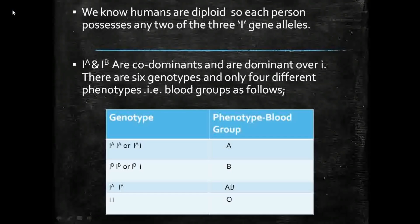Humans are diploid organisms, so each person possesses any two of the three I gene alleles. Iᴬ and Iᴮ are codominant with each other, and both are dominant over small i. There are six genotypes but only four different phenotypes found in the human population.